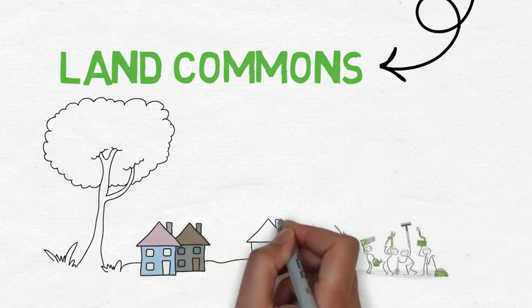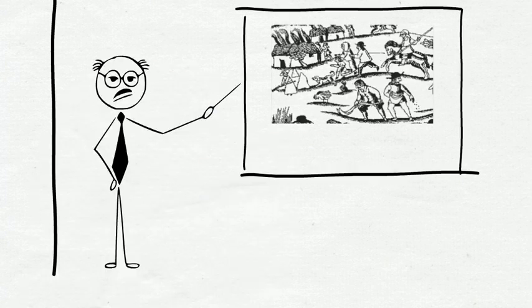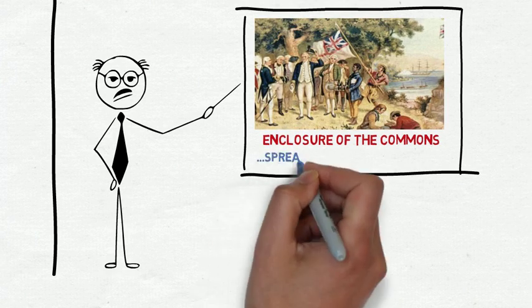However, many people in the developed West have simply forgotten about our heritage of living and being productive on land commons, a heritage that largely ended with the enclosure of the commons in Europe by the 18th century, and an enclosure that spread through the world through a capitalist colonisation.